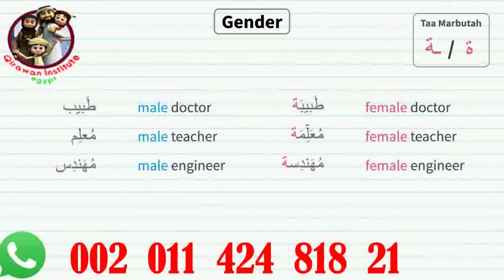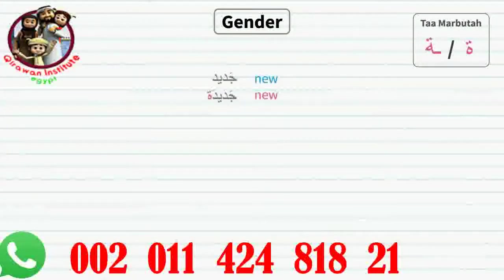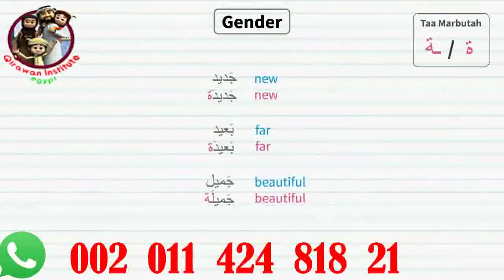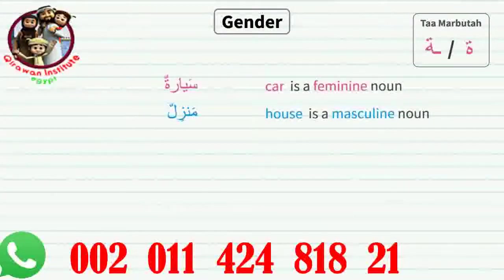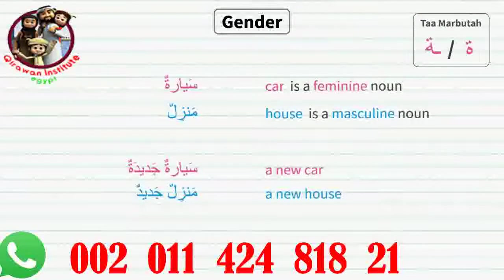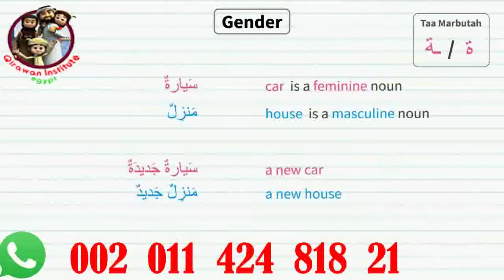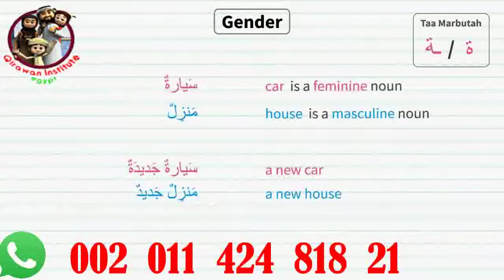Some professions can be turned into feminine by simply adding the ta marbuta to them. Adjectives can also be easily made feminine by adding the ta marbuta to the end. It's important to know the gender of nouns. When using adjectives, if the noun is feminine, the adjective should also be feminine. For example, 'a new car' vs 'a new house' — the car is feminine and the house is masculine. We know the car is feminine because it has the ta marbuta at the end. The adjective 'new' also has masculine and feminine forms, so we use the feminine form for car and masculine for house.